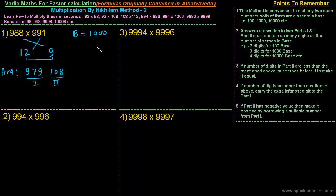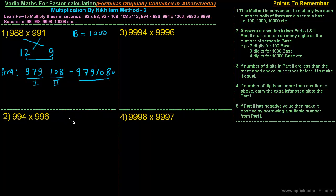Before finalizing the answer, we have to check whether part two contains as many digits as the number of zeros in the base. For numbers closer to one thousand, the second part must contain three digits — and it already does. So the final answer is 979108.